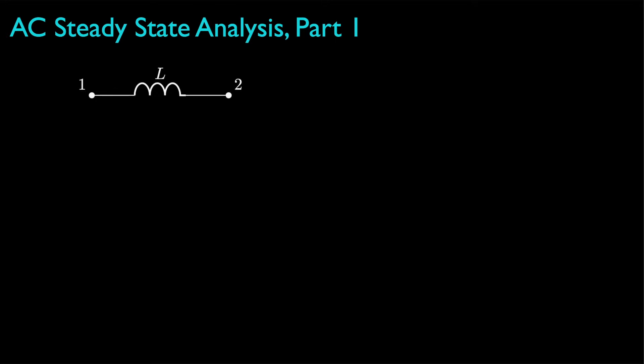The first we'll consider is the inductor, which has a circuit symbol that looks like this, and has an associated inductance that is measured in units called Henrys. Whereas a resistor has an ideal voltage-current relationship — that is V equal IR — the voltage-current relationship for an inductor depends on the way that the current through the inductor changes with time.